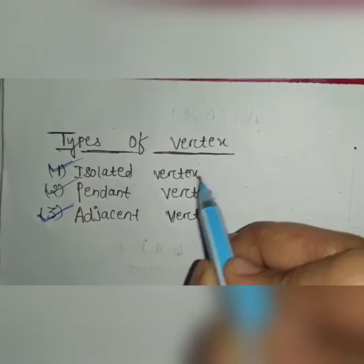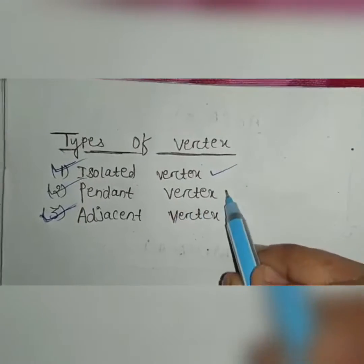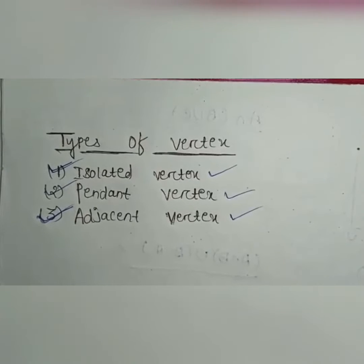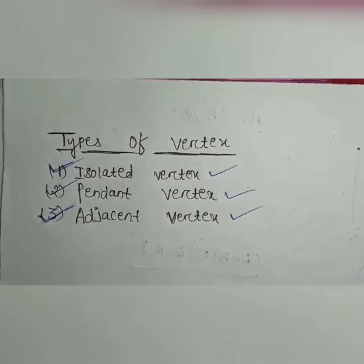First is isolated vertex, then pendant vertex, then adjacent vertex. In this video, I will tell you about isolated vertex.